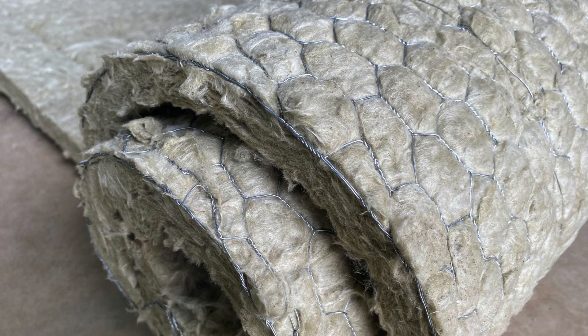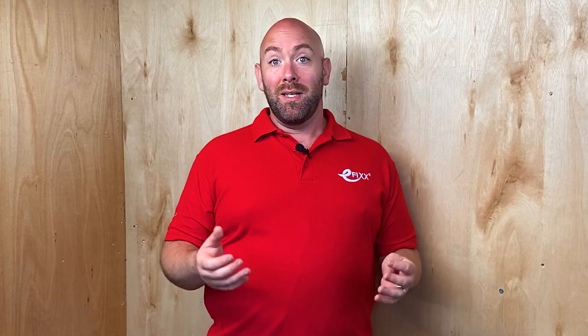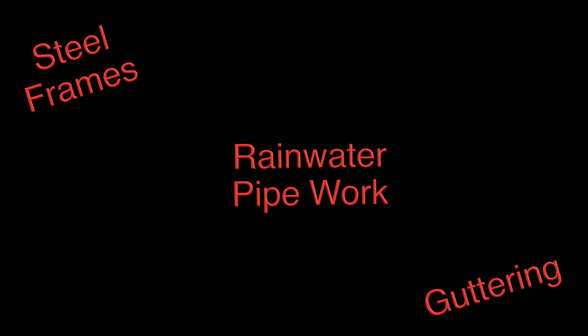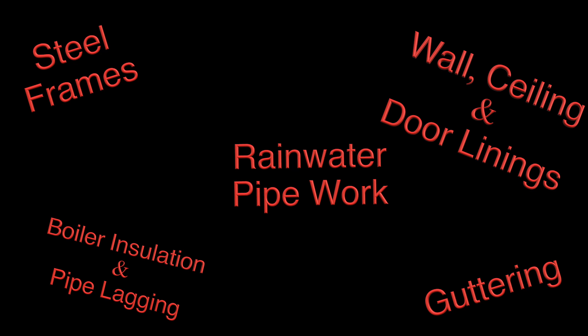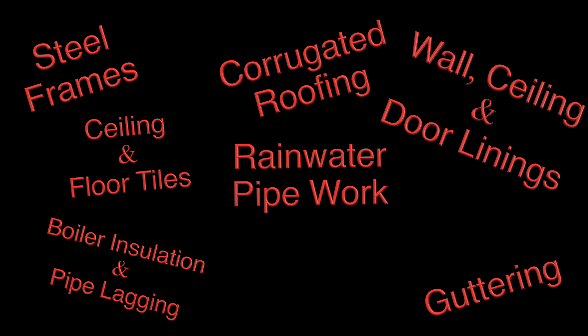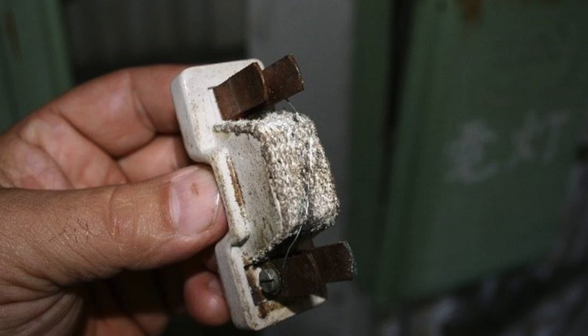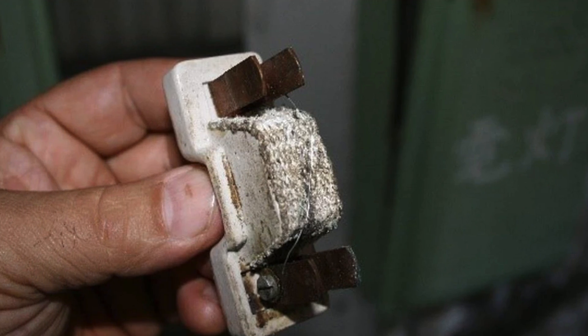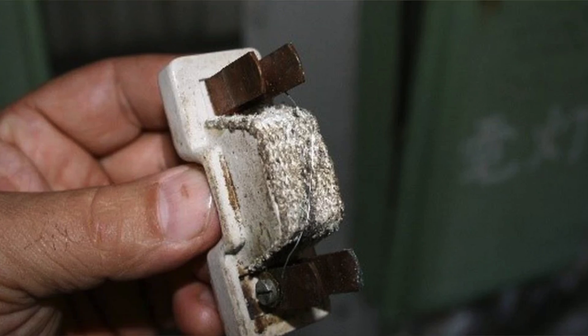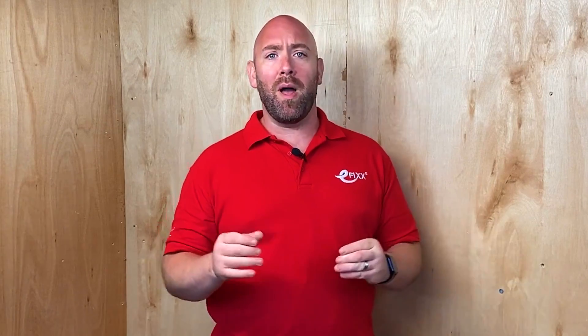You may now be thinking that you want to avoid risk of exposure to asbestos — so where was it used? Unfortunately, it was used everywhere: steel frames, guttering, rainwater pipes, boiler insulation, pipe lagging, wall, ceiling and door linings, corrugated roofing, ceiling and floor tiles. They even used it to make header tanks that went into loft spaces. Electrically, it was used in flash guards — in the old type fuses to protect against arcing and flash. It was used everywhere, and that's because there's no better material out there than asbestos.